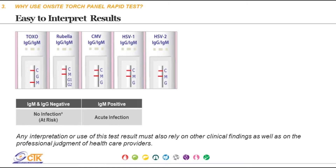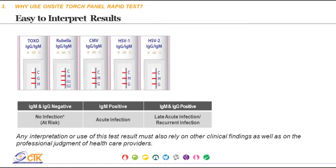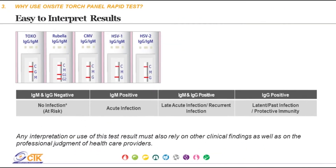If only IgM is positive, an acute infection is indicated. IgM detection can be affected by factors in the immune system, making IgG detection extremely important. Studies have shown that in CMV infection, IgM levels are detectable in both primary and recurrent infection. The presence of both IgM and IgG indicates an acute infection at a later phase or recurrent infection. If only IgG is positive, a latent or past infection is indicated; in the case of rubella, protective immunity is indicated when only the G1 line is present.